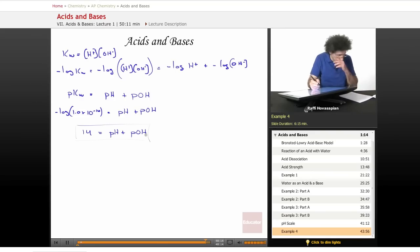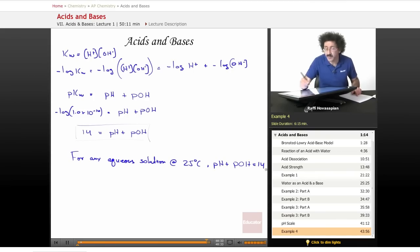That's our final relationship. So, for any aqueous solution at 25 degrees Celsius, pH plus the pOH of the solution equals 14.